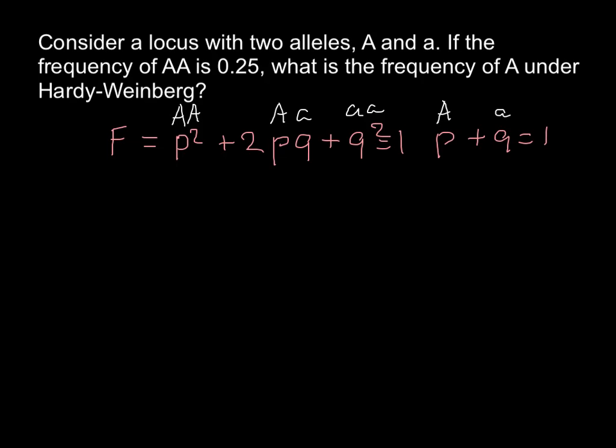If we know that the genotype that is homozygous dominant equals 0.25, and this genotype also equals p squared, we can easily find p, or frequency of the dominant alleles.